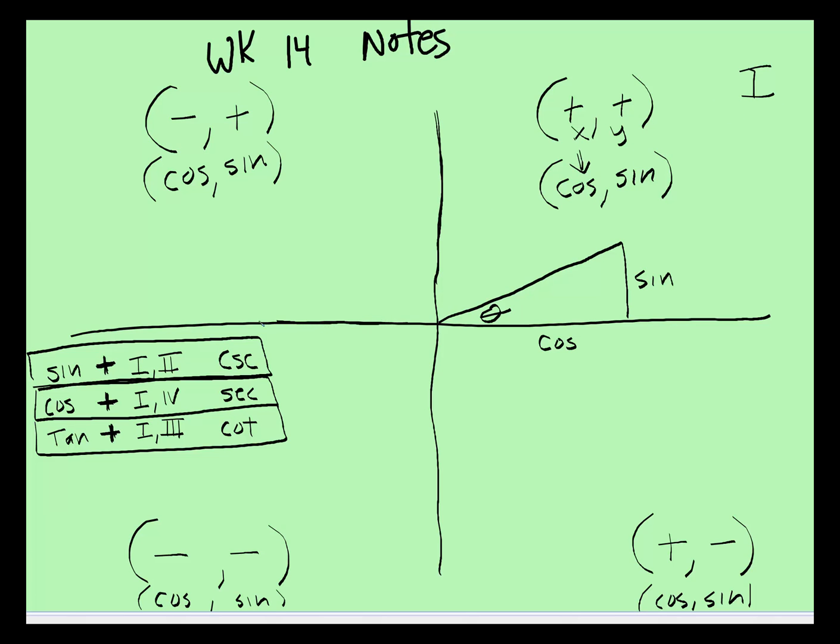In the second quadrant, here the x axis is negative, the cosine is negative, the sine is positive. In the third quadrant, both cosine and sine are negative. And think about it, if both of them are negative or both of them are positive, that's when tangent is going to be positive.